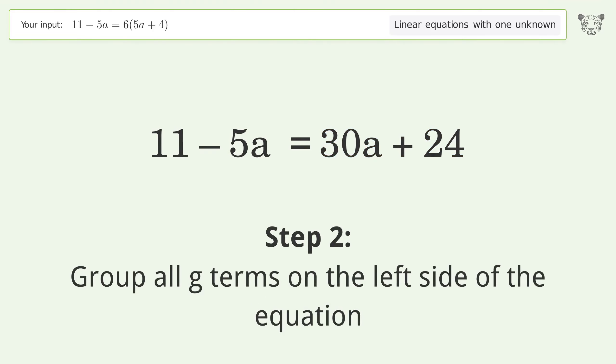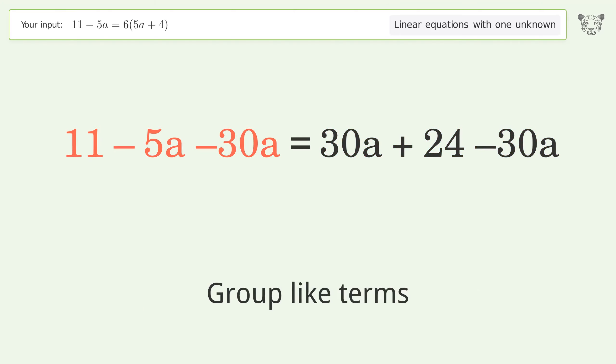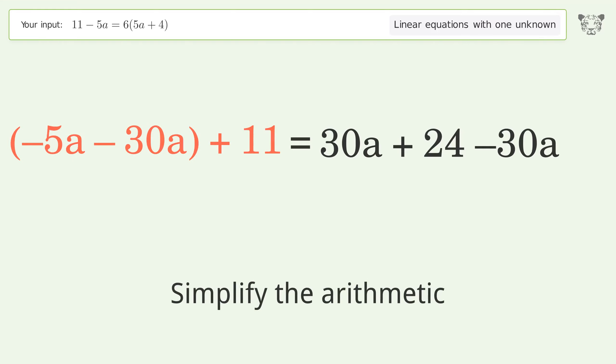Group all a terms on the left side of the equation. Subtract 30a from both sides. Group like terms. Simplify the arithmetic.